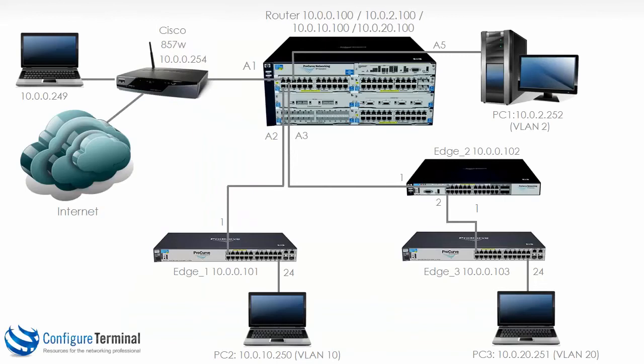We have successfully configured this entire infrastructure to allow the PCs to talk to one another. Later on I'm going to show you how to set up routing and configure routing between our Cisco router and our HP router. I'll also show you later how to get the devices onto the internet. At the moment our local infrastructure is working properly — any PC can ping any other PC.